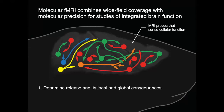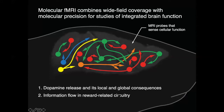My talk today will look at two specific applications of our molecular fMRI technology. The first is dopamine release and the local and global consequences of dopamine — looking at a specific step in neural information flow and synaptic communication involved in reward learning. The second part will discuss information flow in reward-related circuitry, and I'll introduce a new type of molecular tool that we've created that allows us to look at circuit-specific processes in the brain. An important caveat to my whole talk is that by using these tools, we are mostly limited to small animals — the brain mapping I'll tell you about is mostly in rodents today.